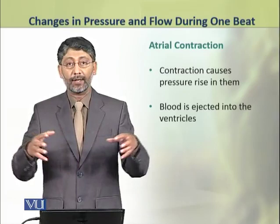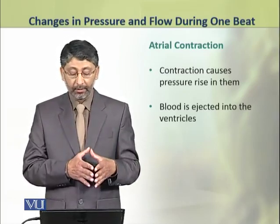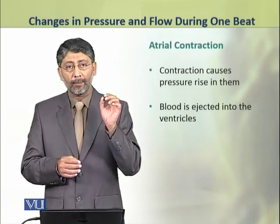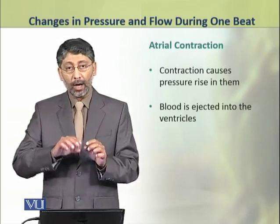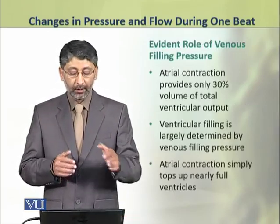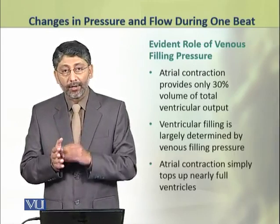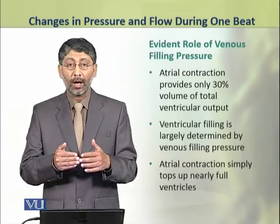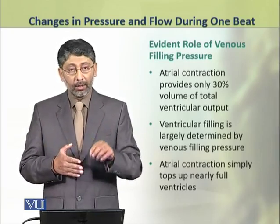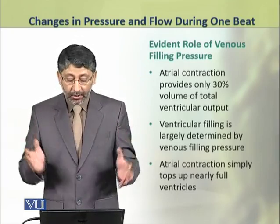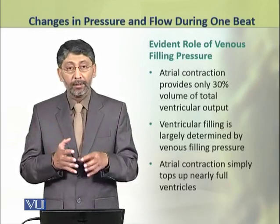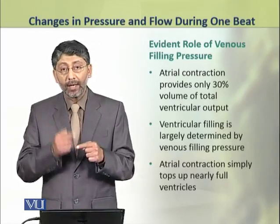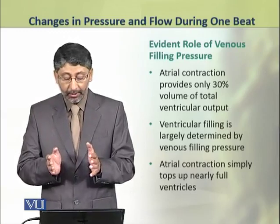The next phase is atrial contraction. When the atria contract, pressure rises in them, and as a result, blood is ejected and flows into the ventricles. The atrial contraction provides only 30% of the total ventricular volume or capacity. Most filling is accomplished by venous filling pressure during diastole, so atrial contraction simply tops up the nearly full ventricles.